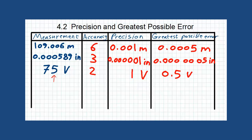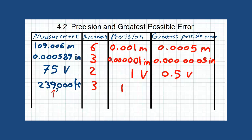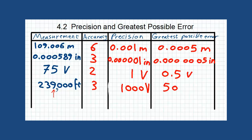Here, the accuracy is 3. The last number counted is changed to 1, with 2 digits before it and 3 digits after. There is no need for the trailing zeros, so our precision is 1,000 volts. Divide this by 2 and you will have 500 volts as the greatest possible error.